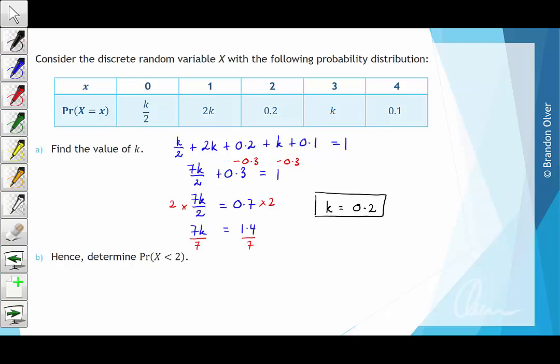Part B says hence determine the probability that x is less than 2. So if k is 0.2, k divided by 2 is 0.1, 2k is 0.4, 0.2 stays at 0.2 and k goes to 0.2.